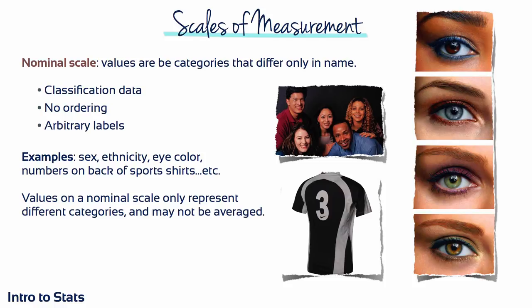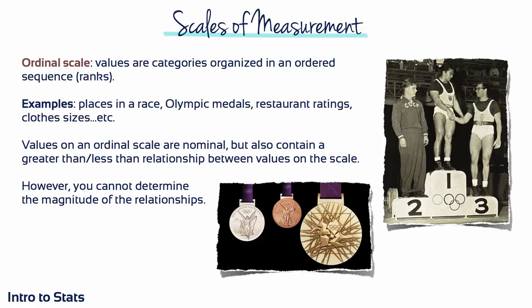The categories that make up an ordinal scale not only have different names but are also organised in a fixed order corresponding to differences of magnitude. Often an ordinal scale consists of a series of ranks — first, second, third, and so on, like the order of finishing a race — or verbal labels like small, medium, or large. With ordinal measurements, you can determine whether two individuals are different and determine the direction of difference — for example, person A is taller than person B. However, ordinal measurements do not allow you to determine the magnitude of difference, so you can't tell by how much taller person A is than person B.